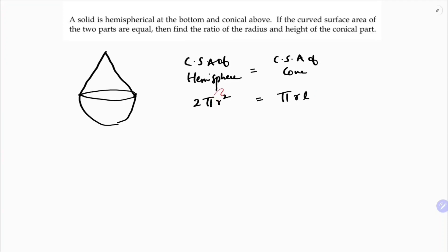Cancelling π from both sides, and since the cone sits directly above the hemisphere, both radii are the same. So we cancel r as well, and we are left with 2r = l. Therefore, the slant height of the cone is 2r.